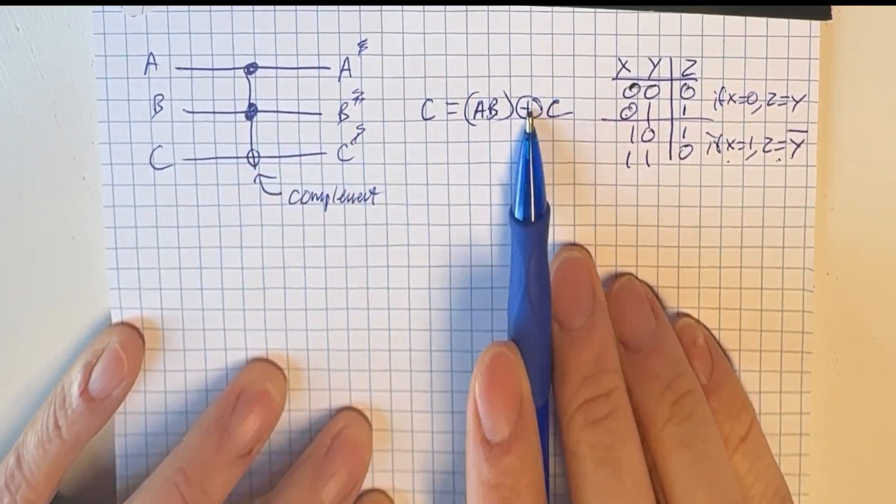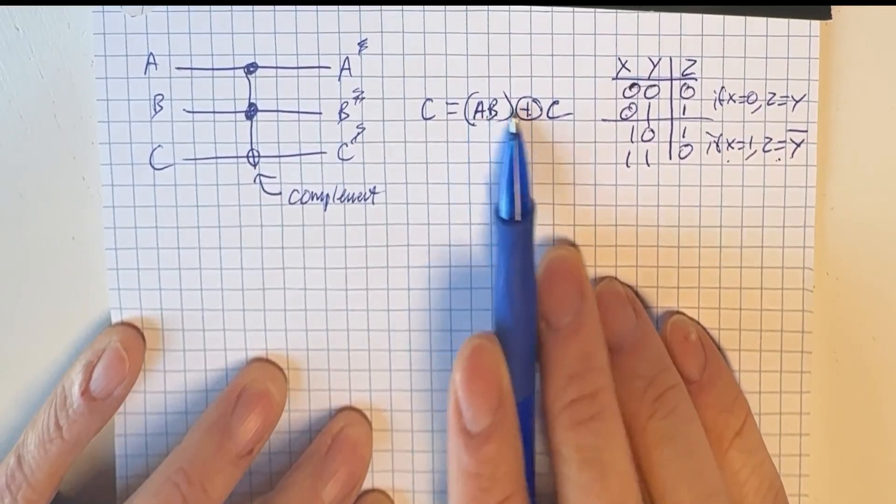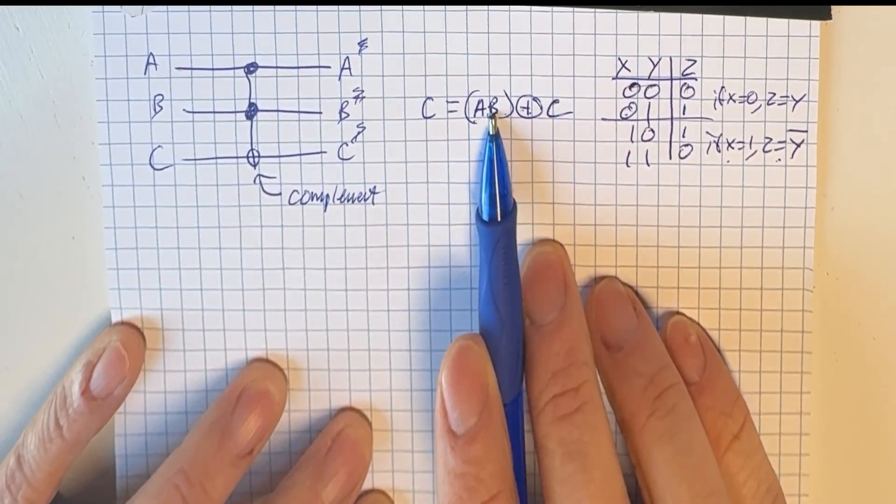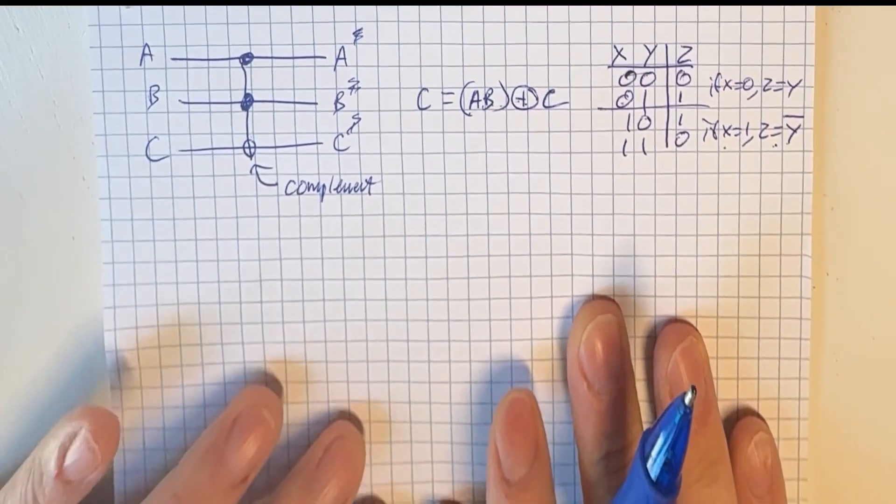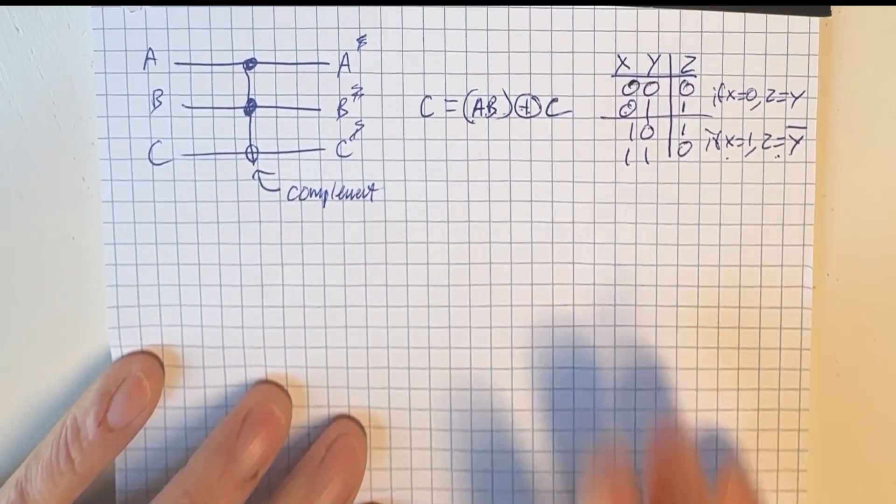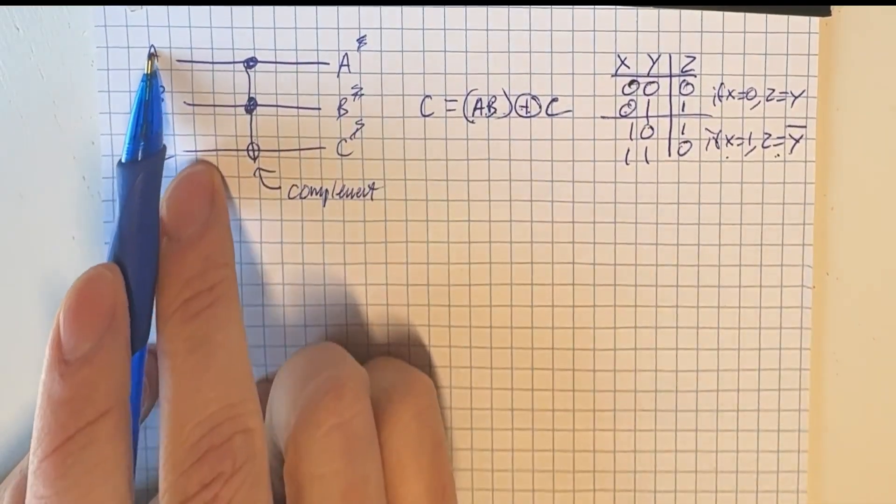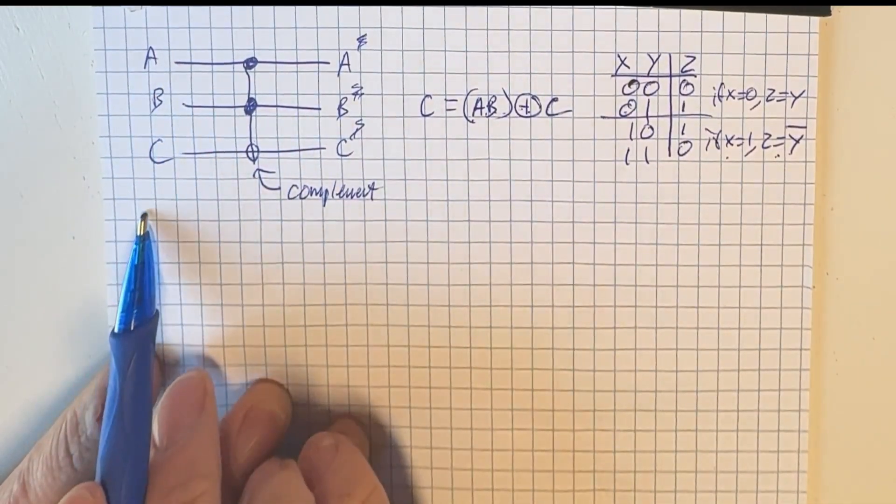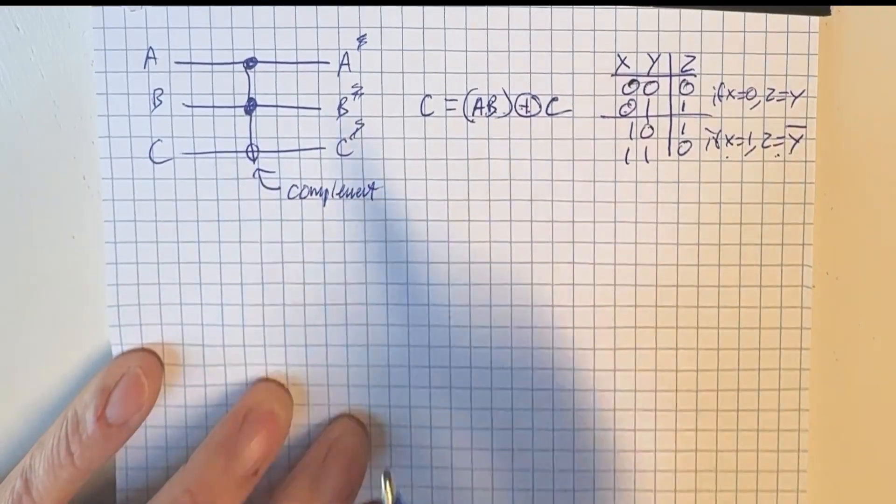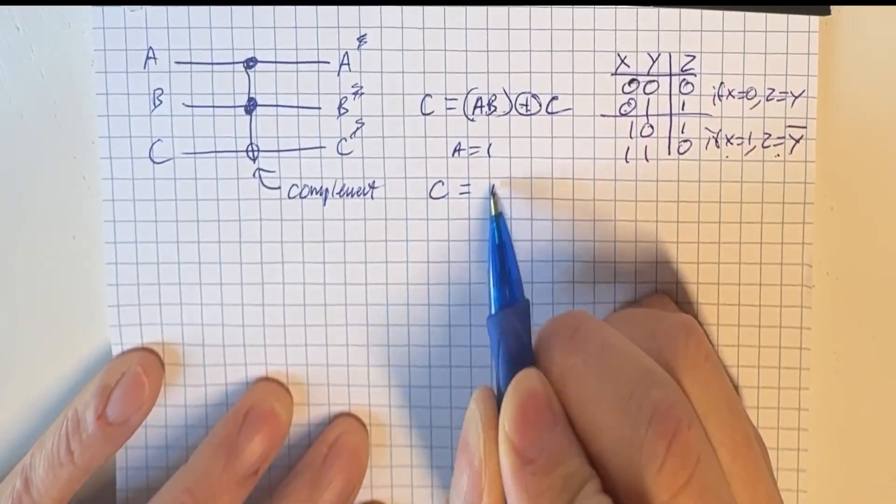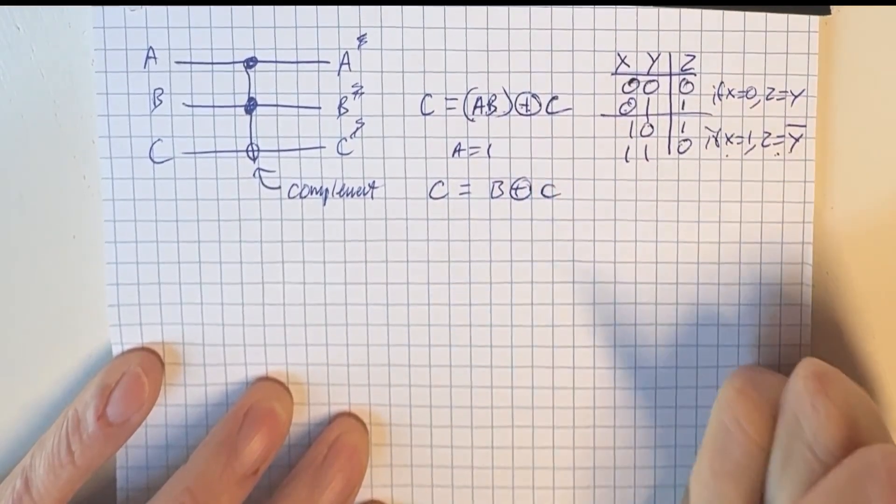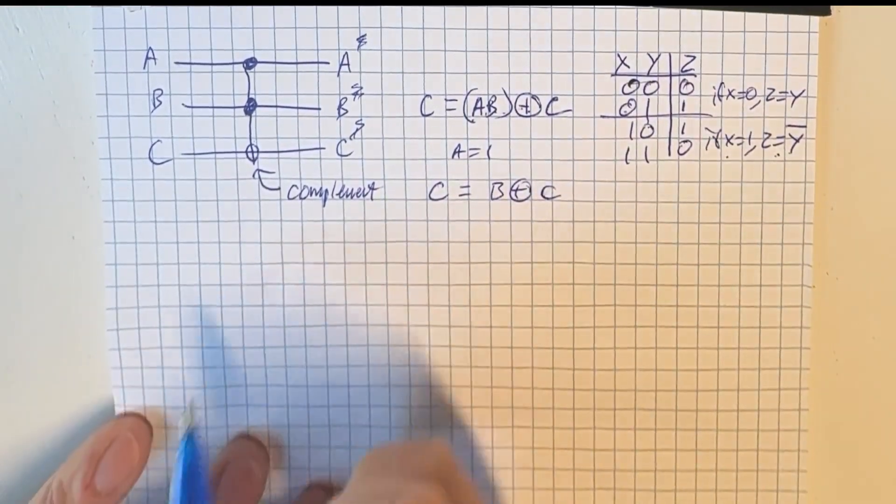Exactly the same here. We flip if A and B are 1 together. We don't flip if either of them are 0. So then if we wanted to make a classical exclusive OR gate, all we have to do is set one of these to 1, and then the other two behave like an exclusive OR gate. If we set A equal 1, then C just equals B exclusive OR C because the 1 goes away. So we set A equal 1.